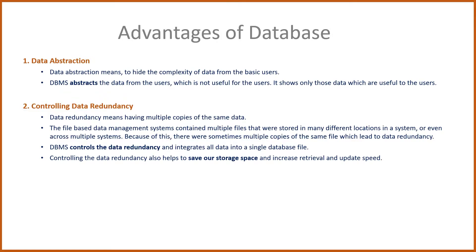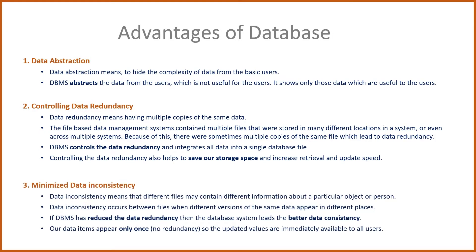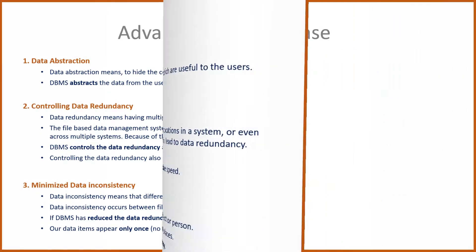Controlling data redundancy also helps to save storage space and increase retrieval and update speed. Next is minimize data inconsistency. Data inconsistency means different files may contain different information about a particular object or person. Data inconsistency occurs between files when different versions of the same data appear in different places. If DBMS has reduced the data redundancy, then the database system leads to better data consistency — data items appear only once, so the updated values are immediately available to all users.